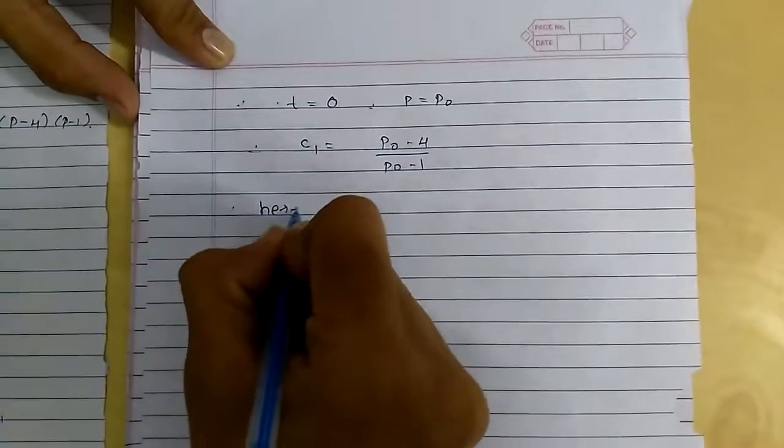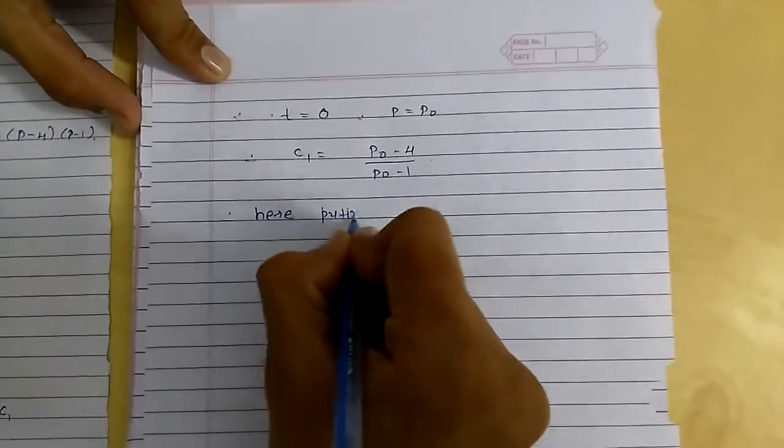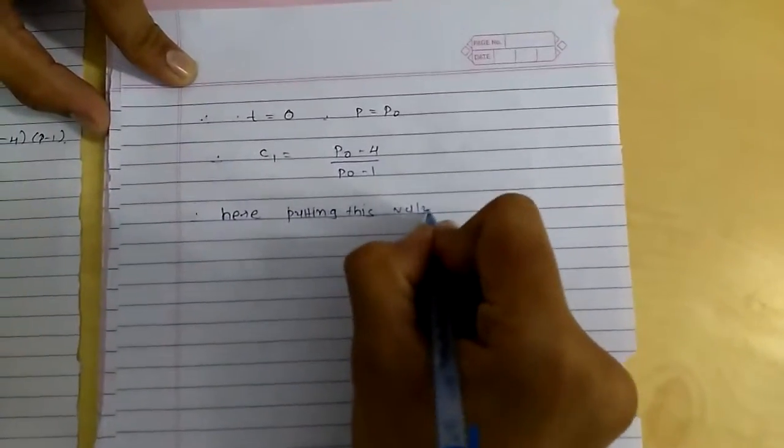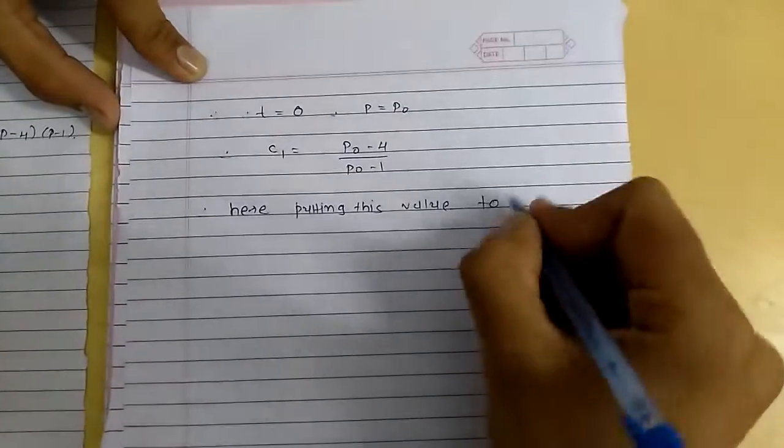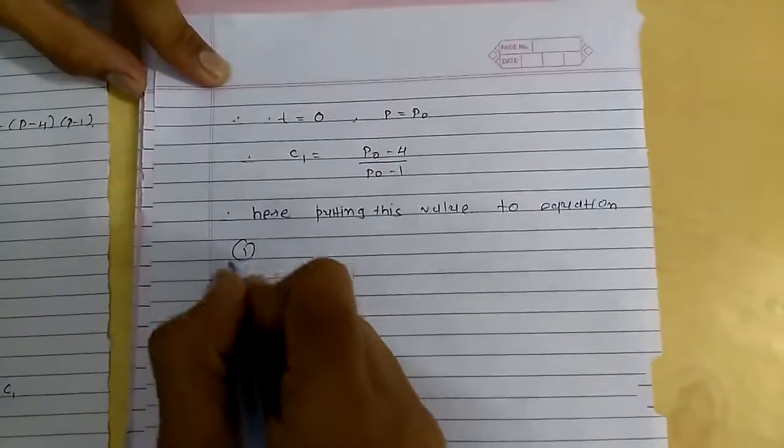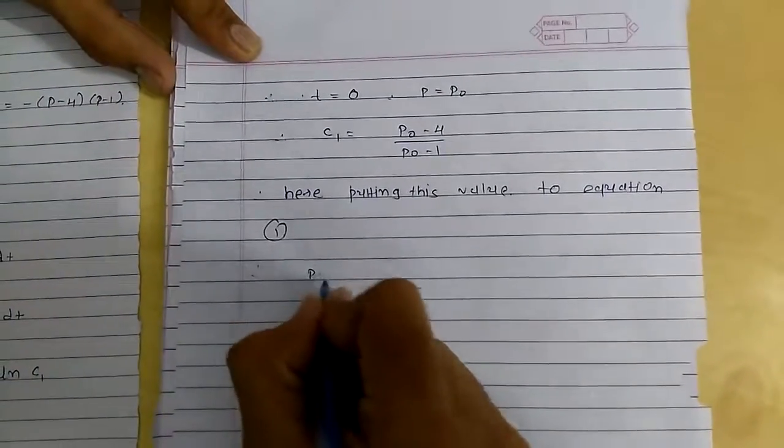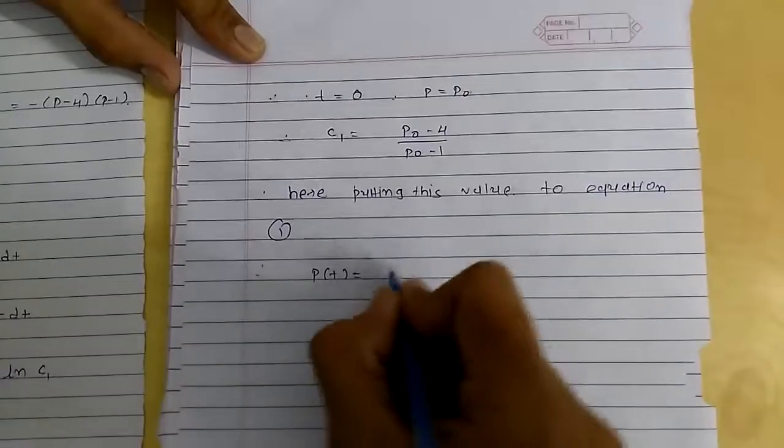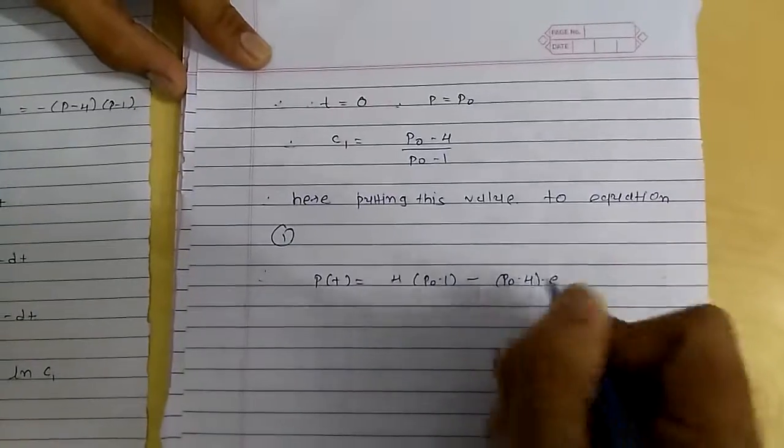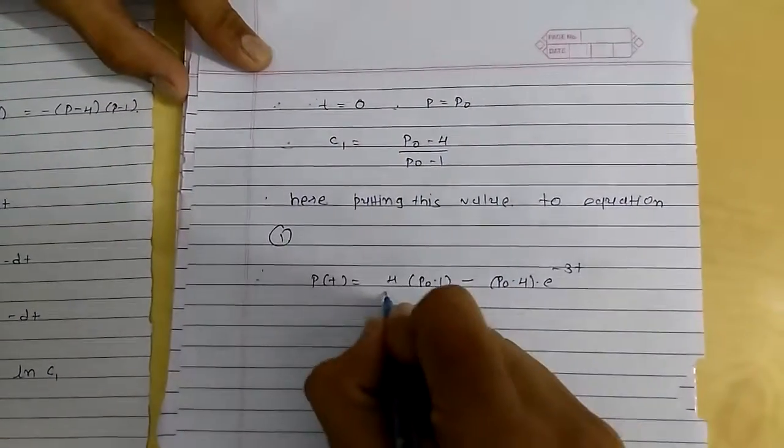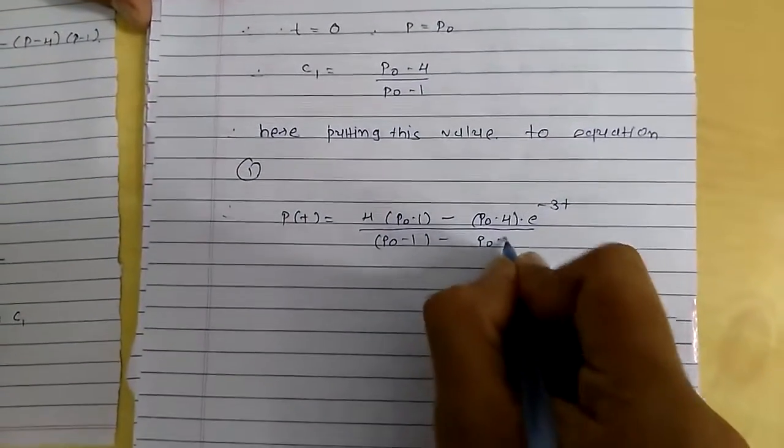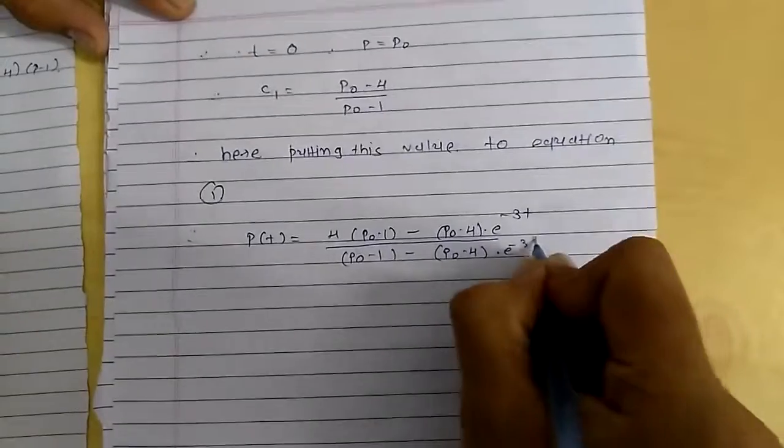Here putting this value into equation 1, p(t) equals (p minus 1 minus (p0 minus 4)e raised to minus 3t) over ((p0 minus 1) minus (p0 minus 4)e raised to minus 3t).